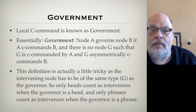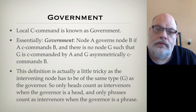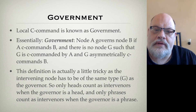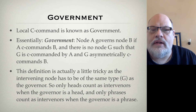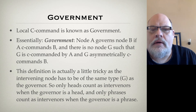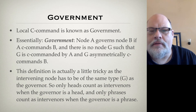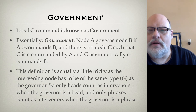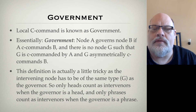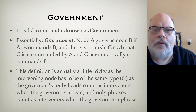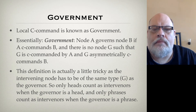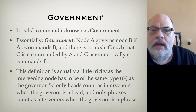Just as we had a local version of dominance — that's immediate dominance — and a local version of precedence — that's immediate precedence — we do in fact have a local version of C-command. It's not called immediate C-command for some reason; it's called government, which is a traditional term from grammar, but it amounts to being local C-command.